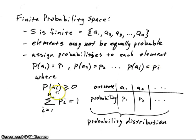Each of those probabilities has to be greater than zero. Also, the sum of all of those probabilities — because each element is disjoint from the others, or mutually exclusive — when we sum them all up, we have to get one. That's a good check to see if you've done the problem correctly: sum them all up and see if you get one.